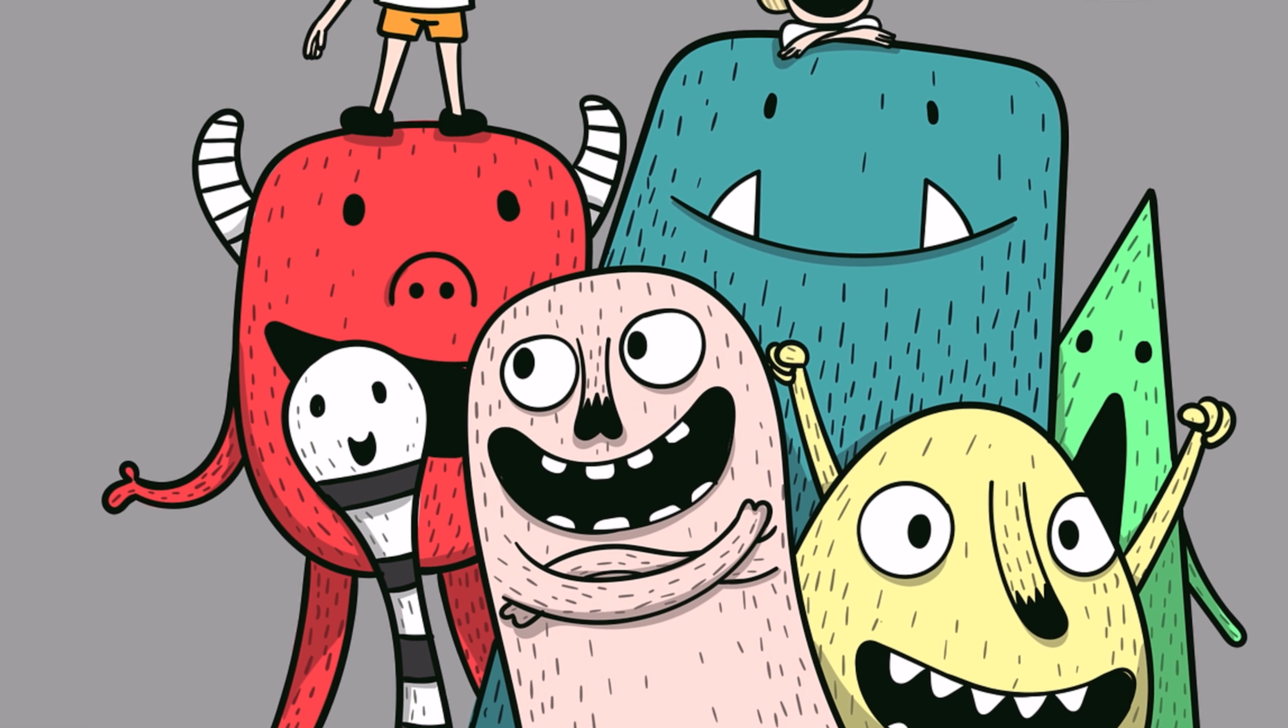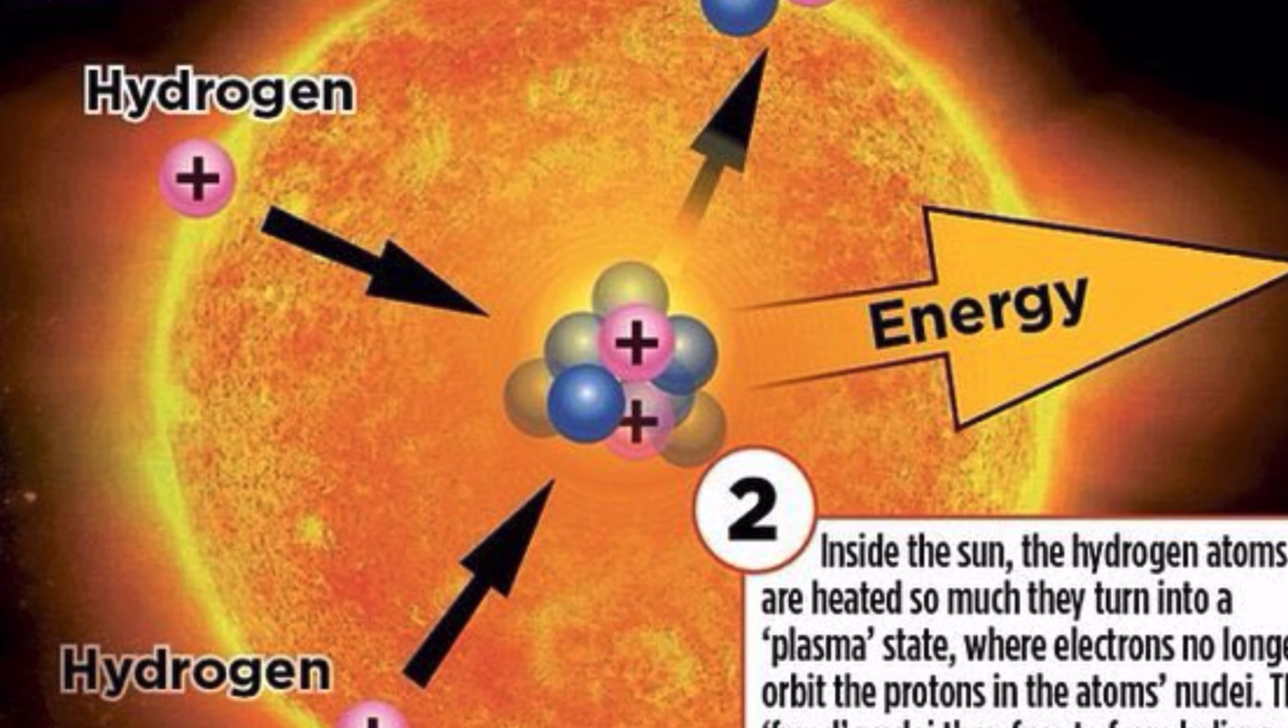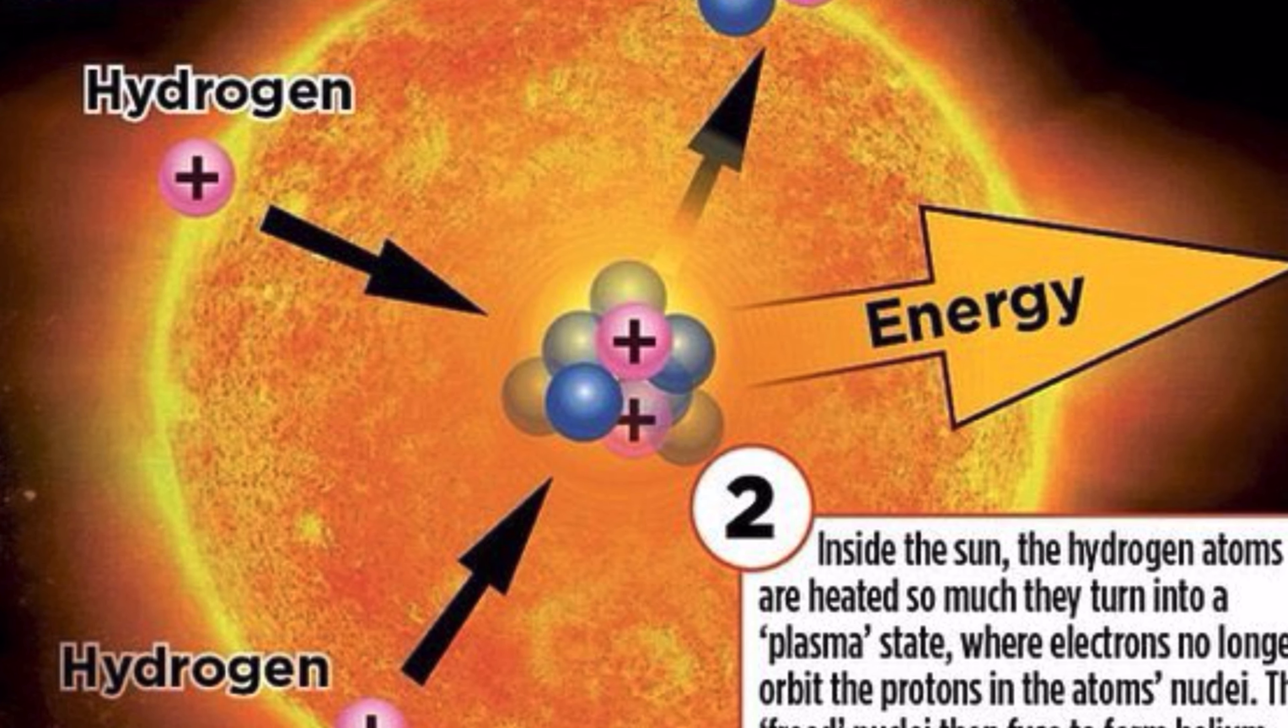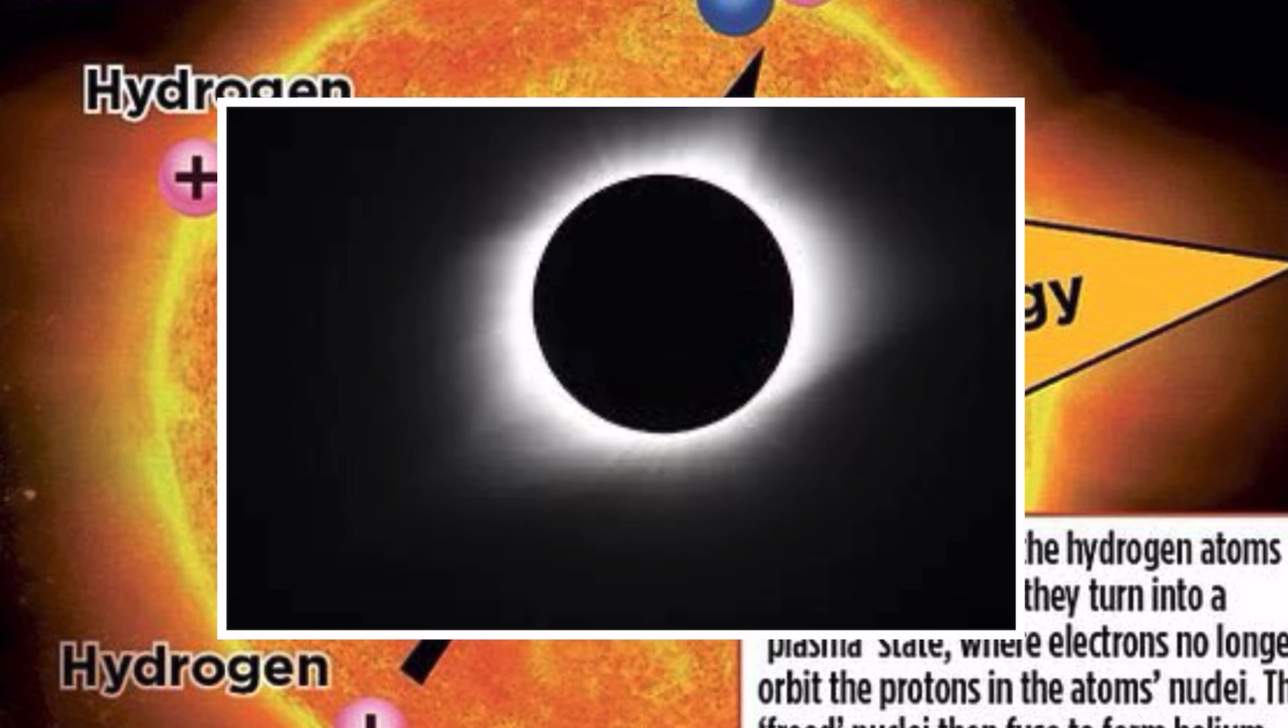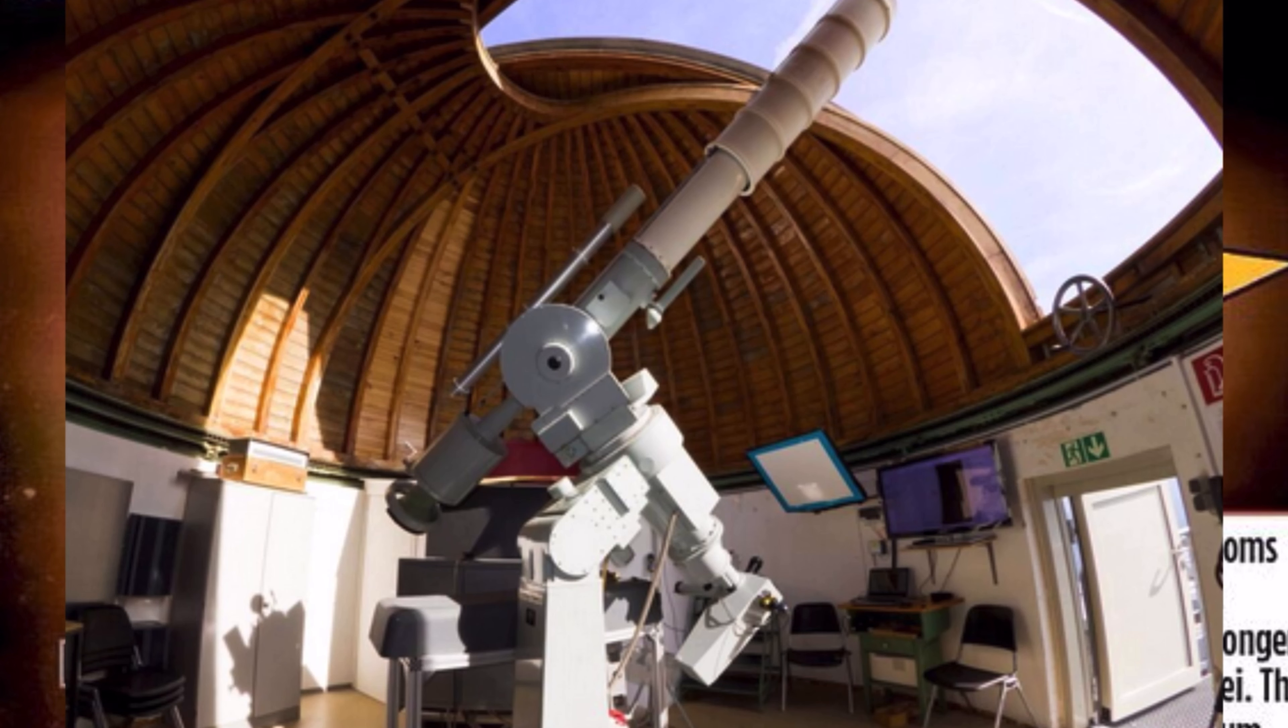The outer layer of the Sun's atmosphere, made up of thin hot gases, is called the corona. Corona is visible only during a total eclipse of the Sun or with a special solar telescope called a coronagraph.